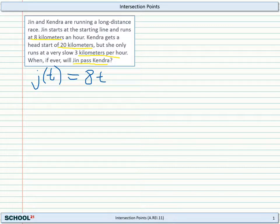Now, how about Kendra? Let's make a function K of T for Kendra. And she moves at 3 kilometers per hour, but she got a head start of 20 kilometers.